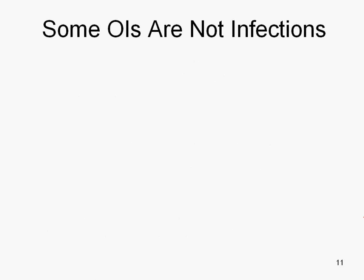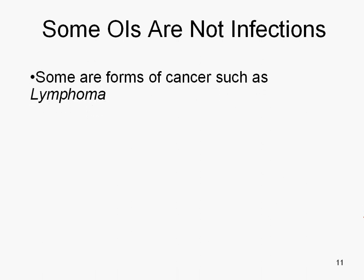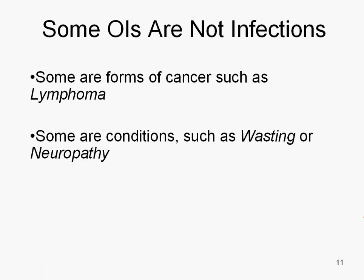Some opportunistic infections are not infections — they're not related to a single germ or microbe. Some are forms of cancer, such as lymphoma. That's actually caused, it seems, by long-term stimulation of B cells — years and years of B cells fighting back and being produced — and sometimes that long-term stimulation can lead to cancer. Also, some are conditions that don't have a single cause, such as wasting or neuropathy.